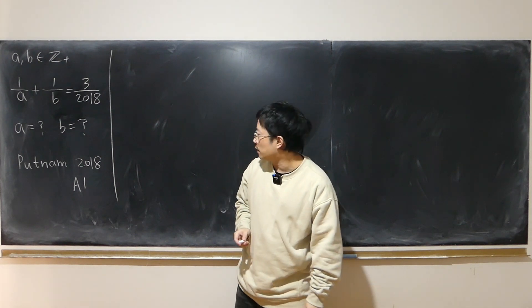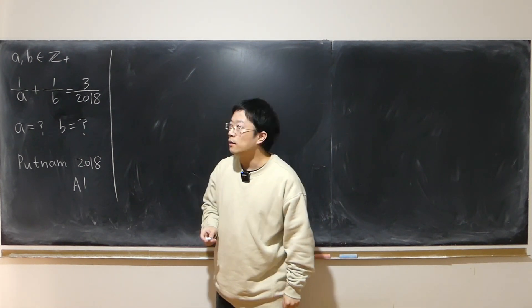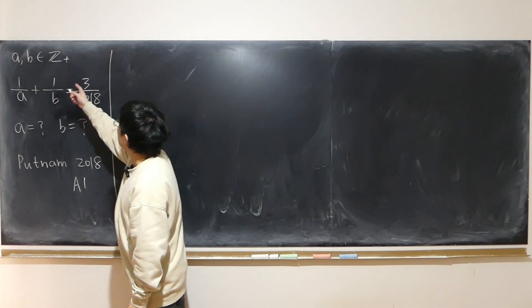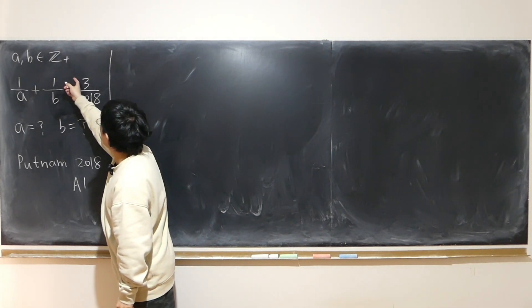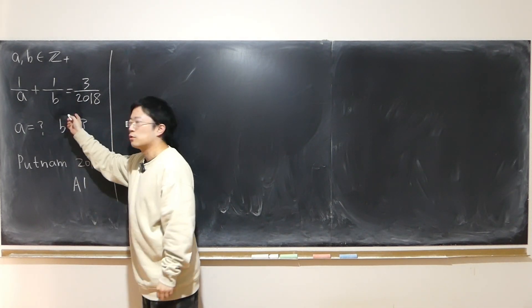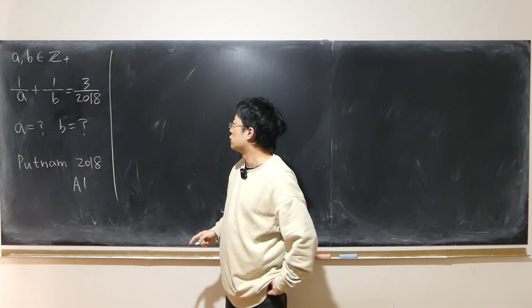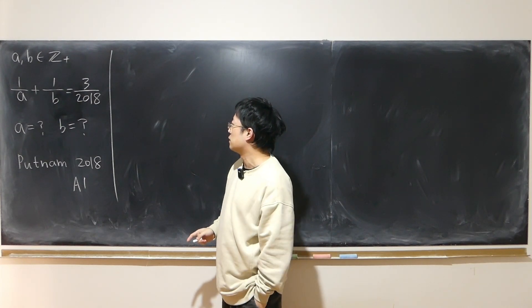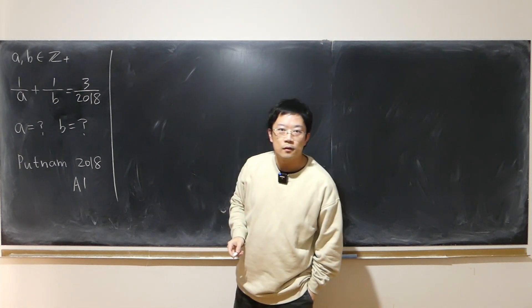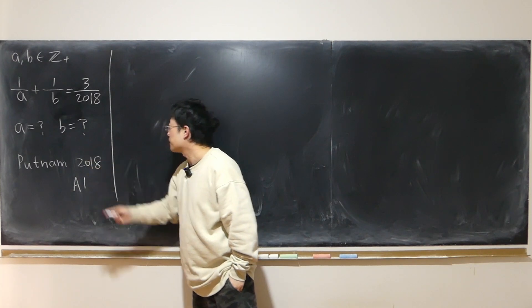This is a question from Portland, 2018. It says we have a pair of positive integers where 1/A + 1/B = 3/2018. What are A and B?